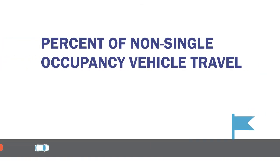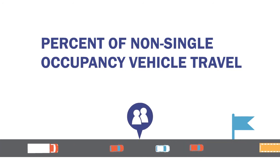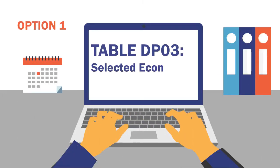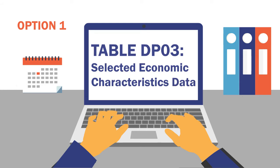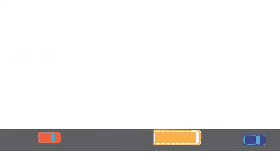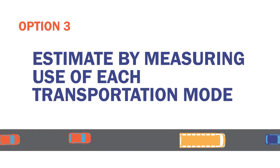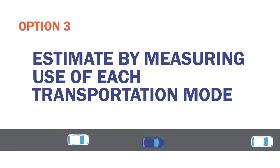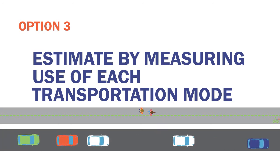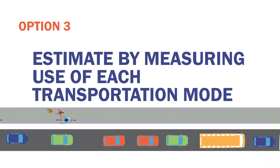The second congestion measure, the percent of non-single occupancy vehicle, or non-SOV travel, measures whether travelers are using modes of transportation other than driving by themselves in their cars. Applicable state DOTs and MPOs have three options for calculating the measure. One option is to use the selected economic characteristics data in table DP03 of the American Community Survey to estimate the total percent of non-SOV travel commuting to work in the urbanized area. A second option is to use local surveys to estimate the percentage of non-SOV travel occurring in the urbanized areas. The third option is to estimate the percent of non-SOV travel based on volume measurements of actual use of each transportation mode, including but not limited to cars, bicycles, pedestrian travel, travel avoided by telework, and on-road bus transit. For full details about each method, review the appropriate regulations and consult with your state's FHWA division office.